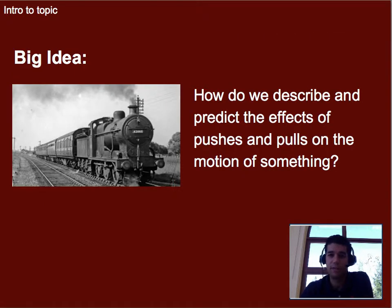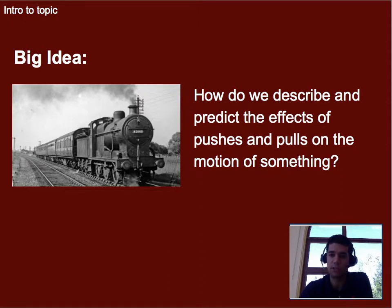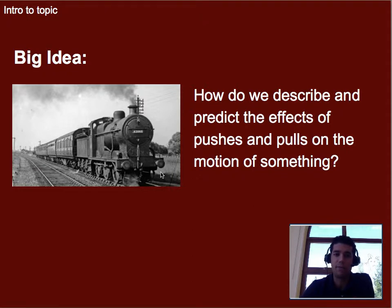The big idea we're focusing on over the course of a couple of units is: how do we describe and predict the effects of pushes and pulls on the motion of something? In this case, what I mean is if we get a push from an engine — such as this train right here — how do we predict how fast that full train is going to go given how much the engine can push or pull?